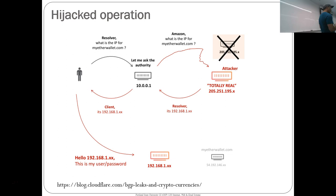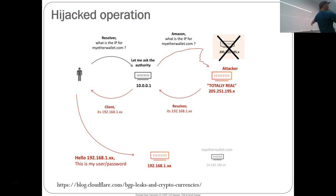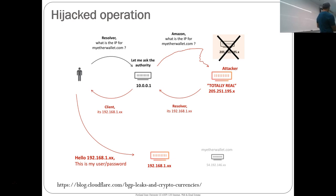If the attacker had set up the site properly, as a user there's no way to detect it — the web address would be exactly the same. Then they just need your username and password and could use that against the real MyEtherWallet. This is different from a typo-squatting attack — this is the actual name because you've hijacked the lookup. Much sneakier. The attacker responds to the DNS request themselves because they advertised a more specific route to Route 53, the fake IP gets passed back to the client, and the client redirects to the fake website in Russia.